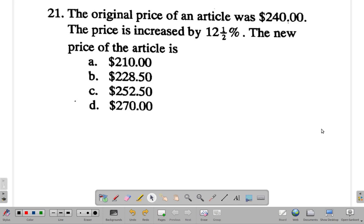Question 21. This is Consumer Arithmetic. The original price of an article was $240.00. The price is increased by 12.5%. What is the new price? The new price of the article is? Pause the video and do it in one minute and come back.